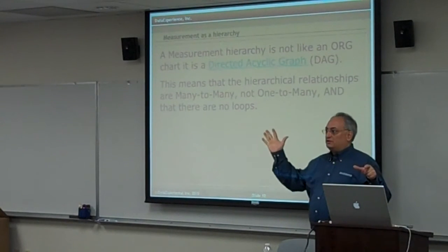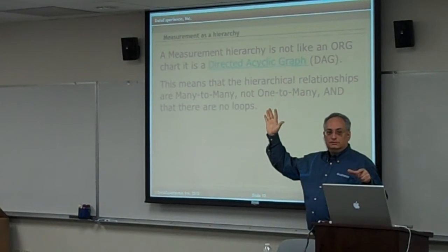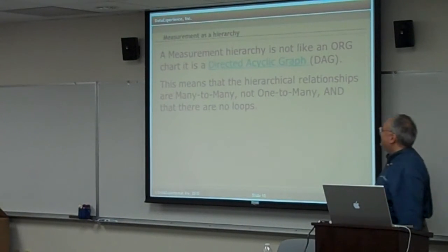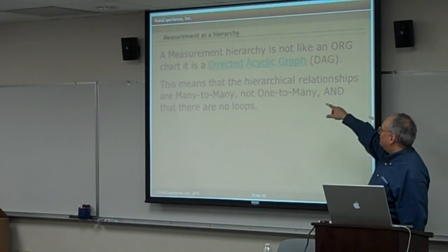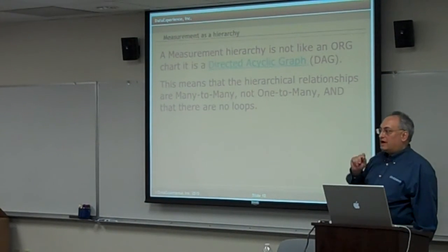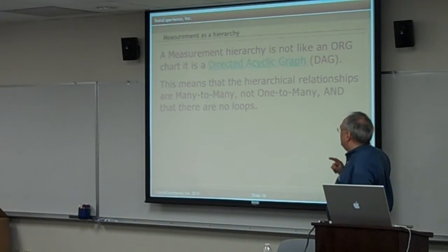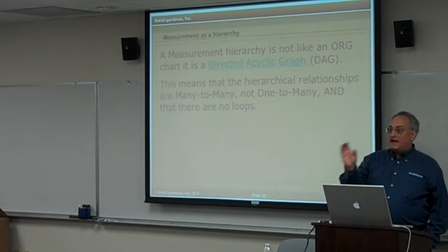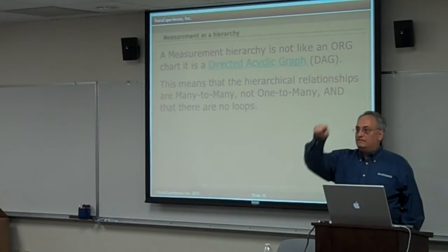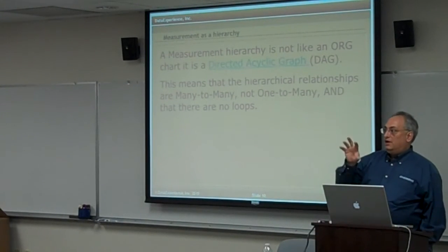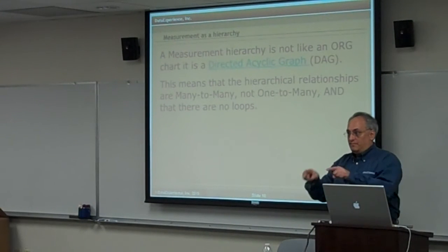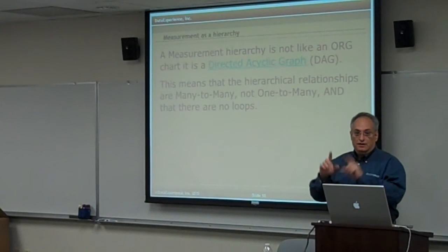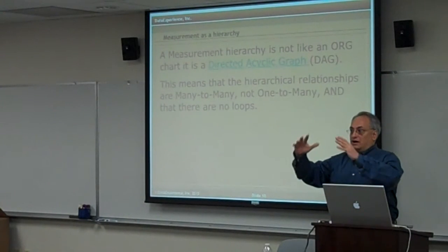An org chart, right? Who was visualizing an org chart when I said hierarchy? It's not an org chart — it's what's called a directed acyclic graph. A directed acyclic graph has certain characteristics. The first characteristic is that the hierarchical relationships are many-to-many, not one-to-many. If I create a metric, that metric can be involved in many other metrics — it can be used by other metrics, and it can be created by many other metrics. So there's a many-to-many relationship throughout the hierarchy, but there is still a hierarchy.